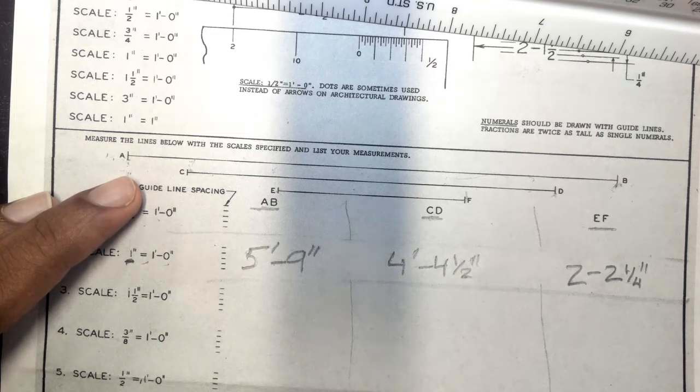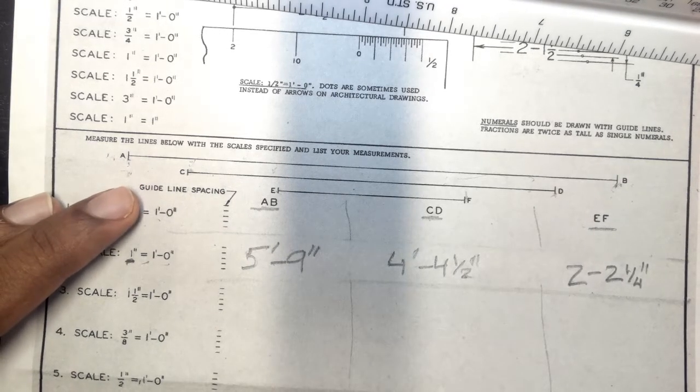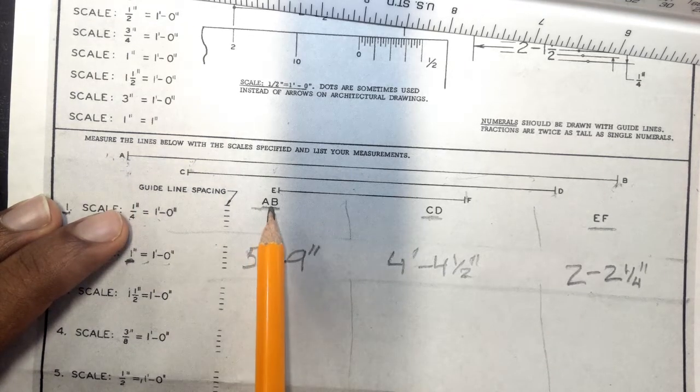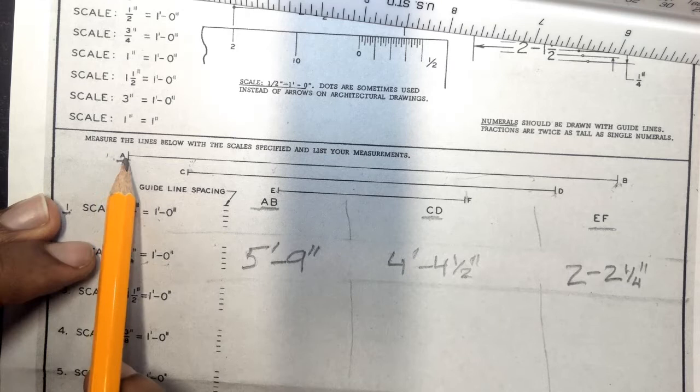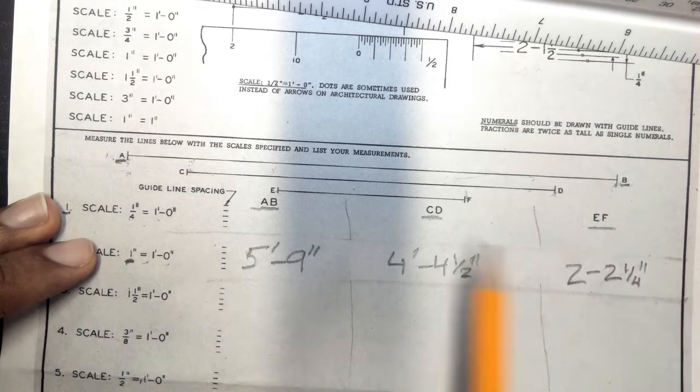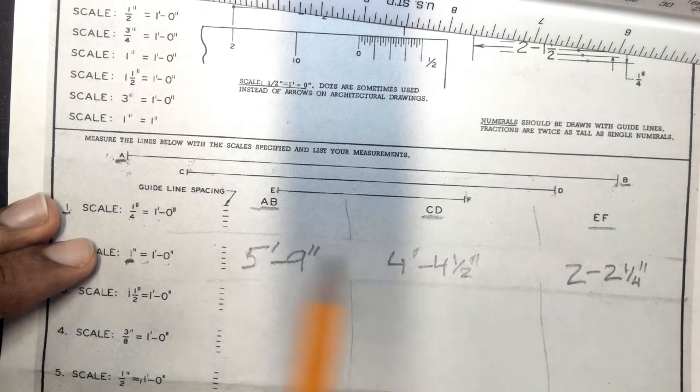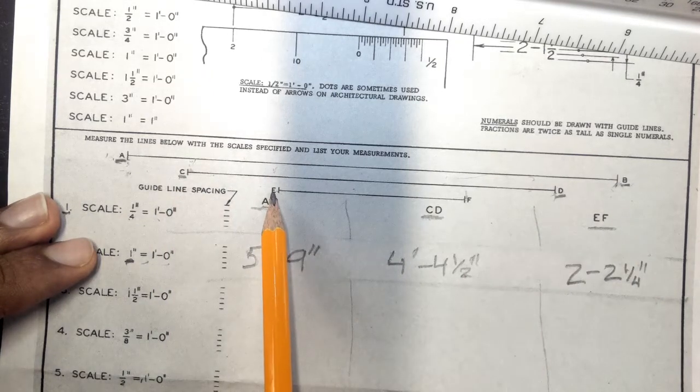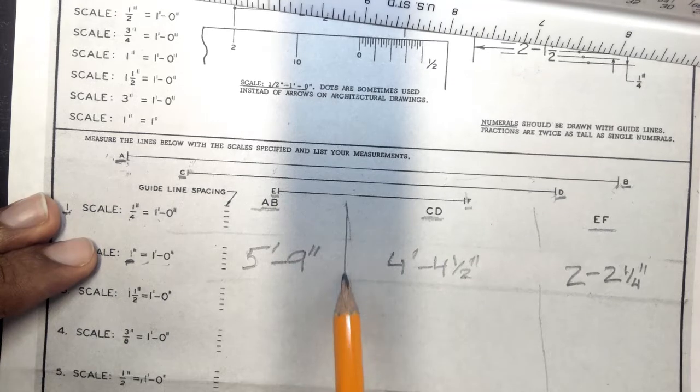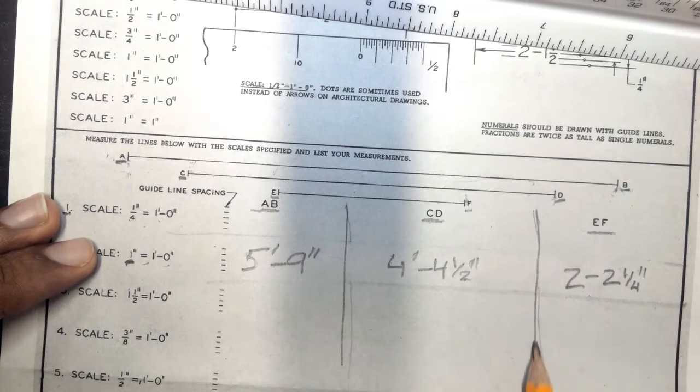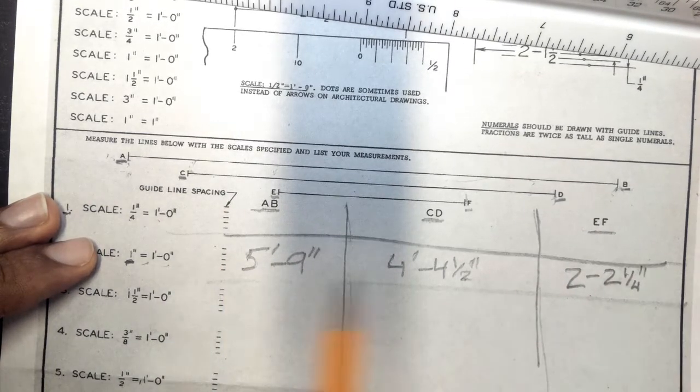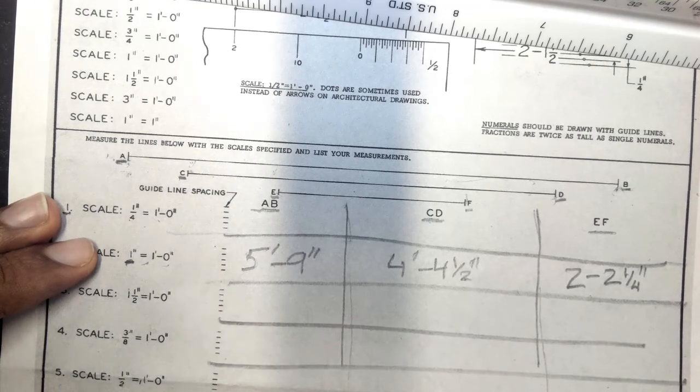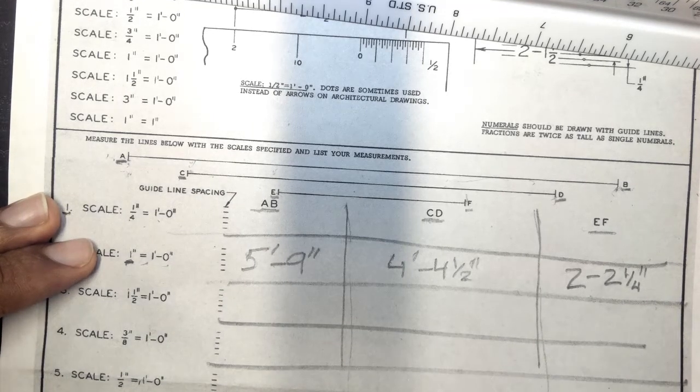So the next thing we're going to do is I'm going to explain the worksheet. So AB corresponds to line A to B. CD corresponds to line C to D. EF is measurement from E to F. So what that means is each question is going to have three answers. You're going to be coming up with three answers for each question.